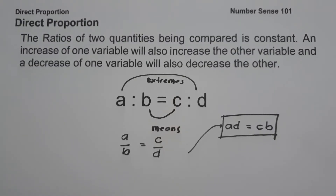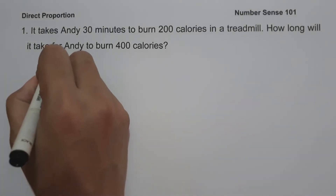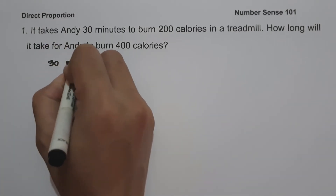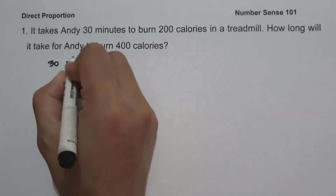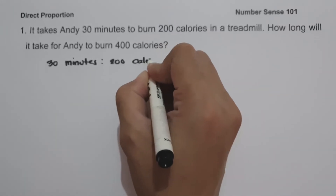So let's start and let's have an example. On the first example, it takes Andy 30 minutes to burn 200 calories in a treadmill. How long will it take for Andy to burn 400 calories? To determine the number of minutes for Andy to burn 400 calories, let us write the given ratios — 30 minutes is to 200 calories.